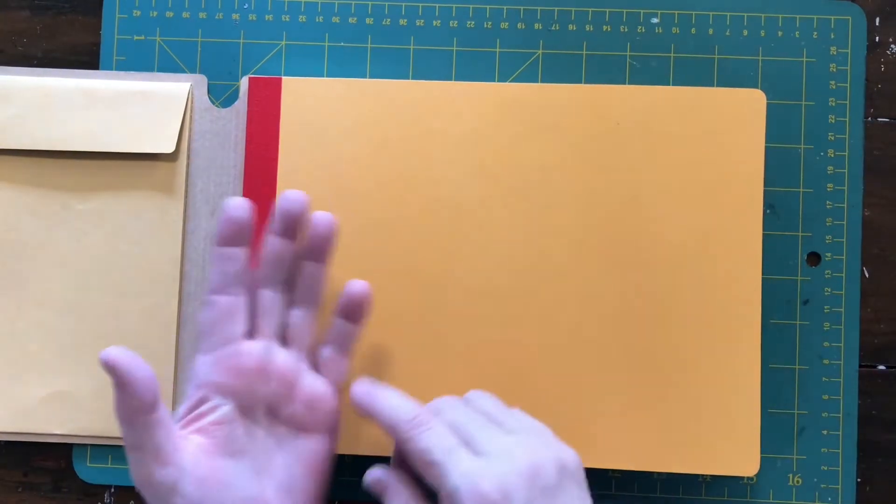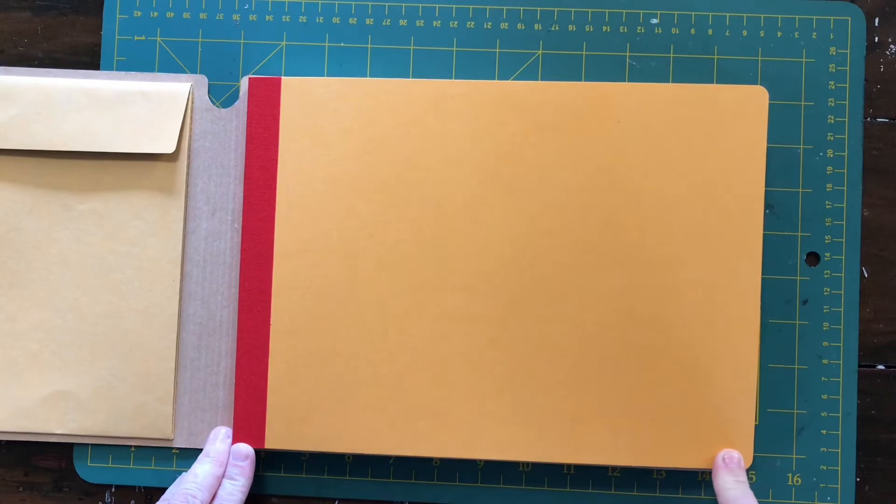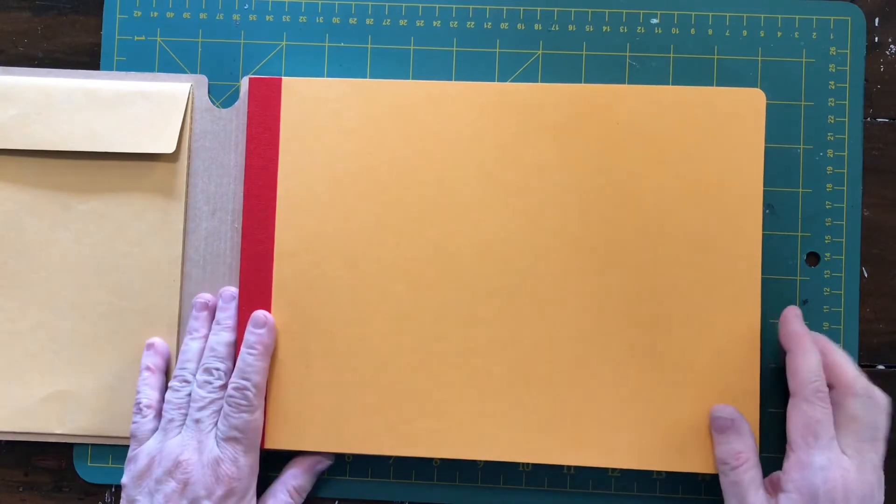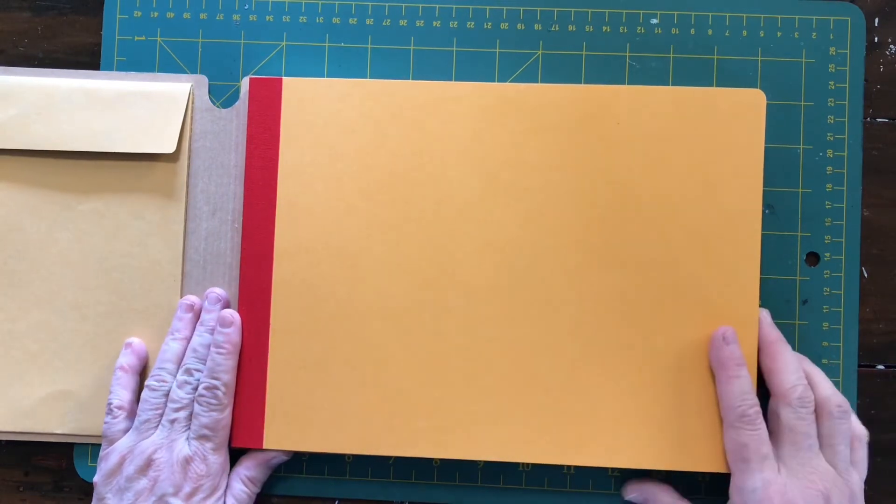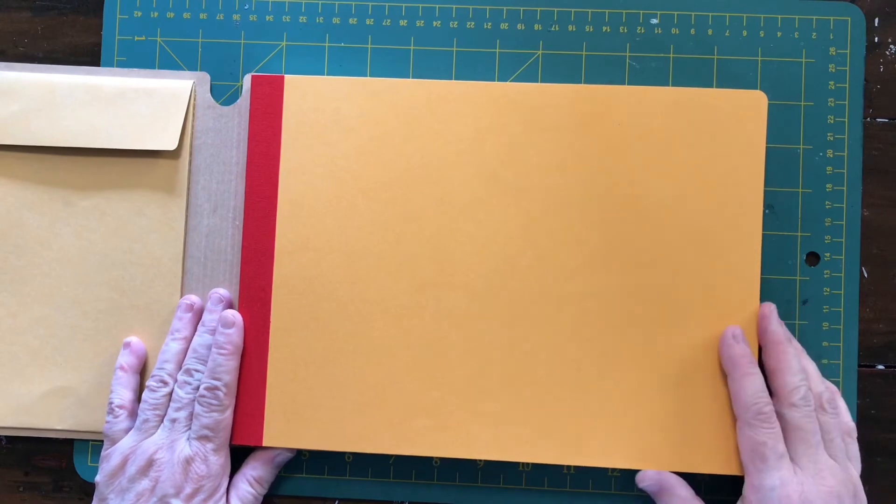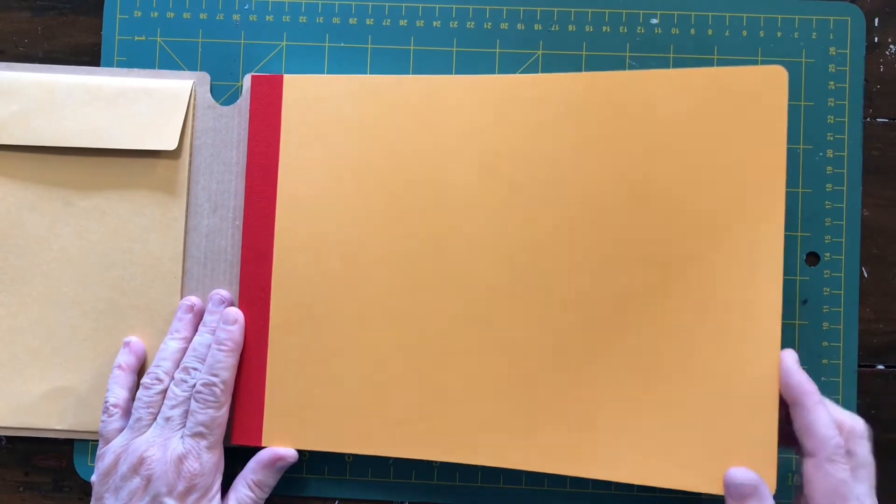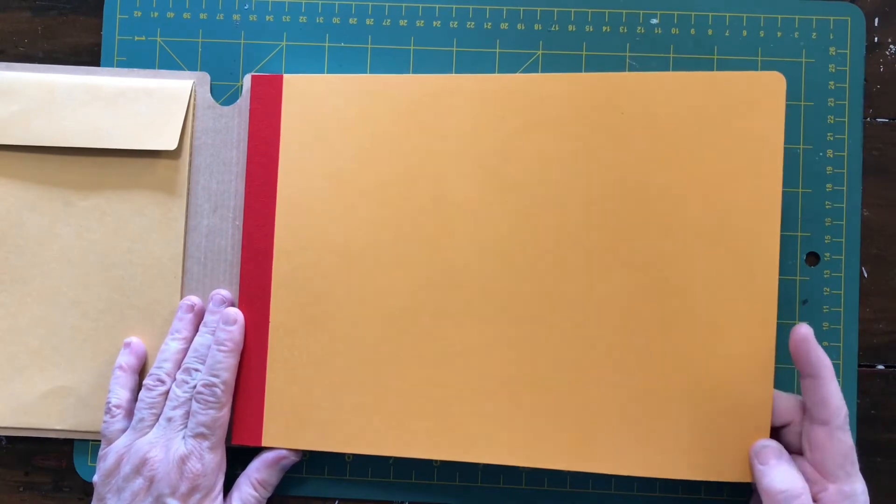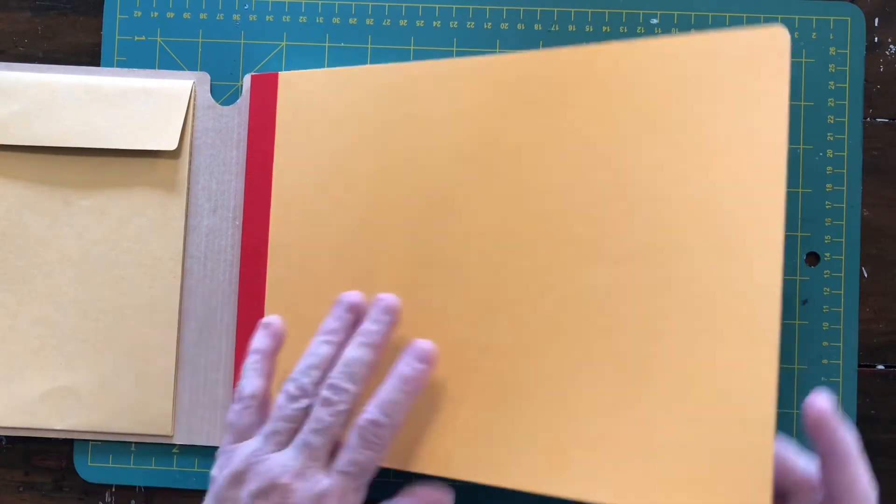So normally when you open a book the binding would be on the long side so it would be in portrait mode. They didn't have any of those the day I got this so I opted to buy this one which is in landscape but I actually think that's fine. In fact I think it probably is going to work better for me.